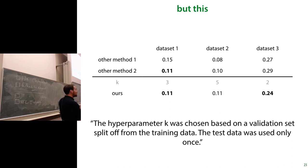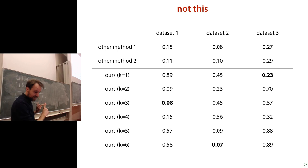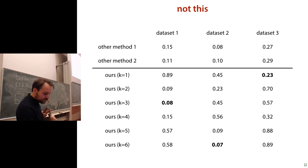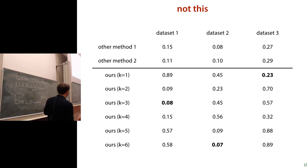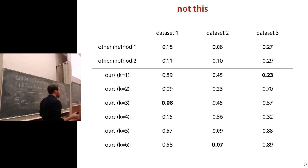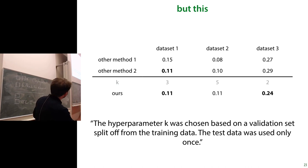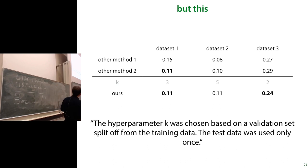What they should have done is: choose your hyperparameter on the validation set for each model. For each model you get a different hyperparameter, and you get one error value to report. Basically, the incorrect table implies three false conclusions: that the authors have a better model (not true due to overfitting), that dataset one requires k=3 (possibly the wrong model), and that you can expect 0.08 error (inflated). The correct approach gives numbers that are slightly worse but actually trustworthy.